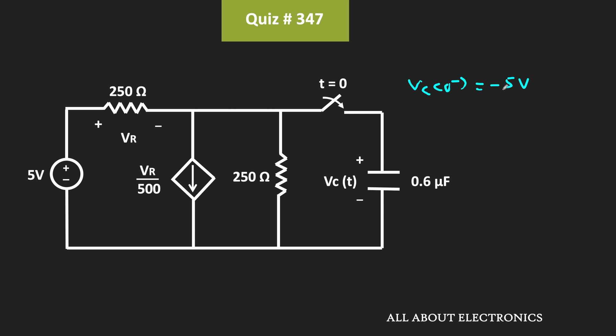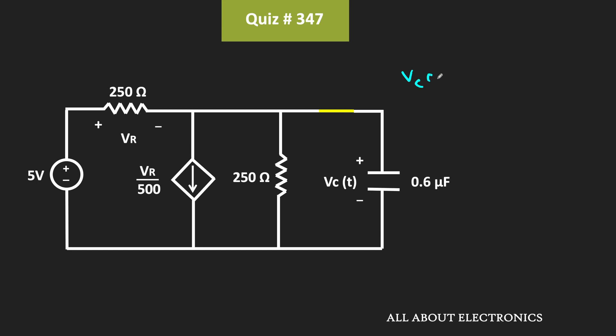We know that the capacitor opposes the instantaneous change in voltage. That means once the switch is closed, at time t = 0+, the voltage across the capacitor will remain the same — that is, Vc(0+) is equal to -5V.